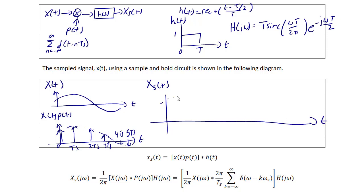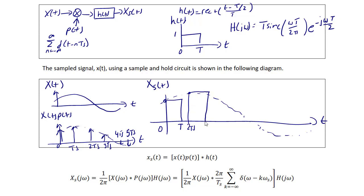The sampled signal XS(t) is when you hold those values. At each sample time, the value is held for T time — for example, at 2·TS the value holds for length T, then at 3·TS it holds for length T, and so on through 4·TS and 5·TS. XS(t) equals the product X(t)·P(t) convolved with H(t).